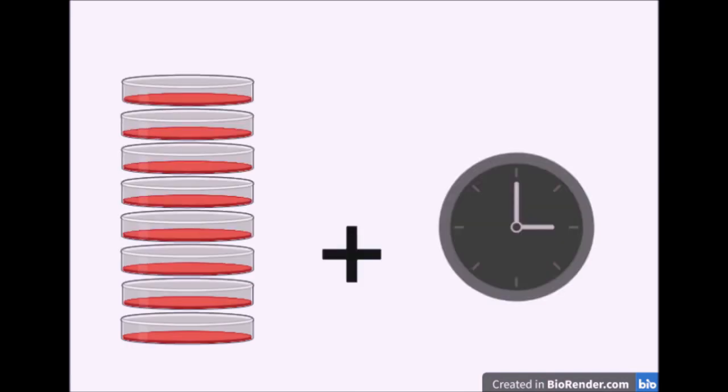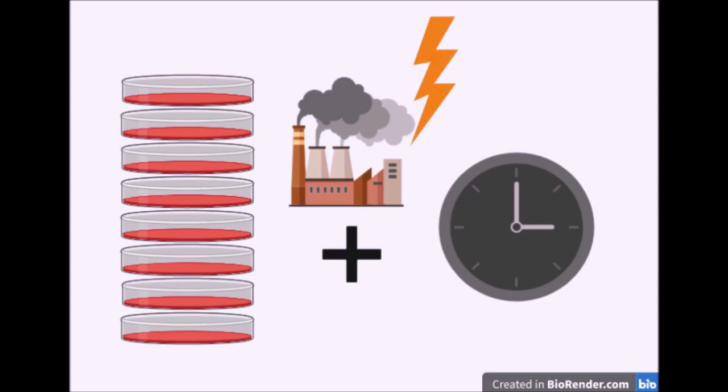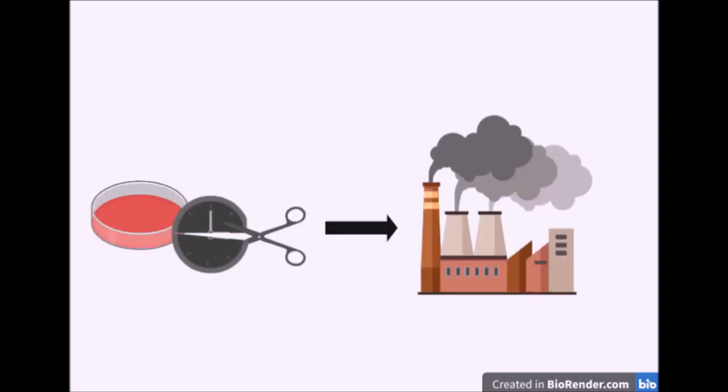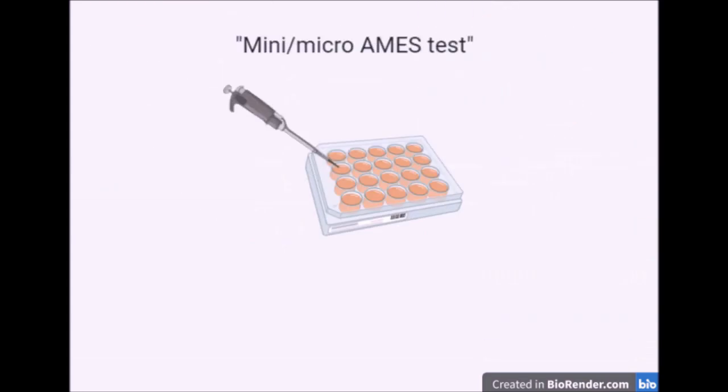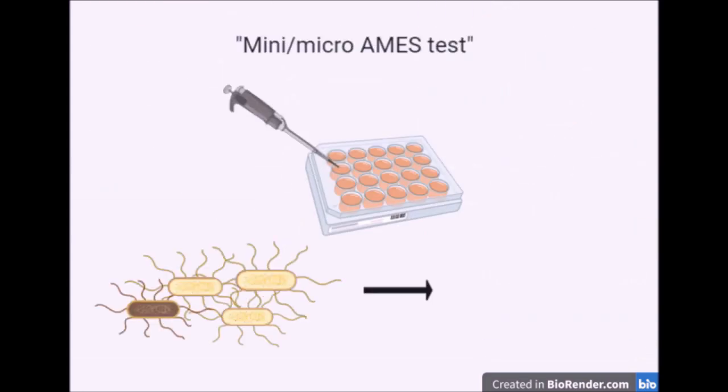All in all, the described test principle of the standard Ames test is pretty simple and reliable, but it takes too much material and time to use it for industrial purposes. For this reason, more and more Ames test variations have been developed over time which use the same principle but are adapted to the shortage of material and time in the industry. An example is the mini Ames test, which requires less bacteria.